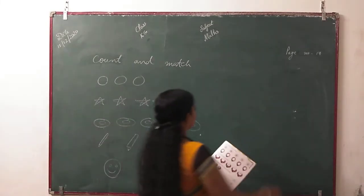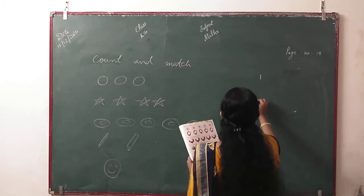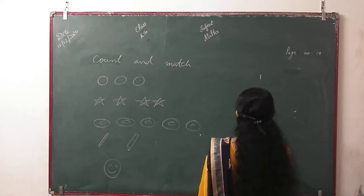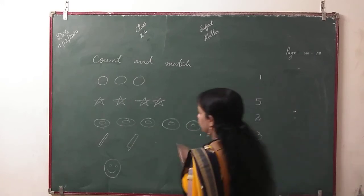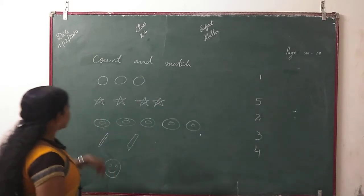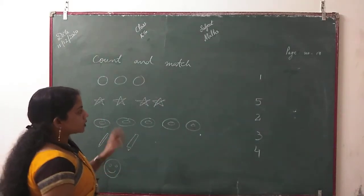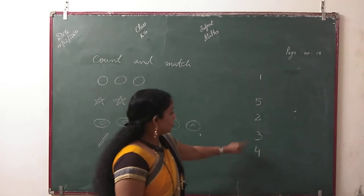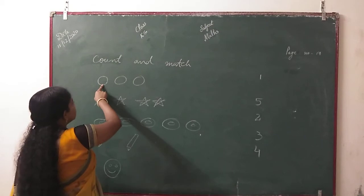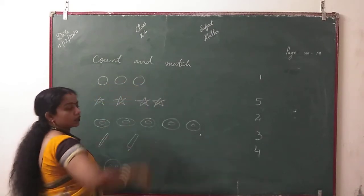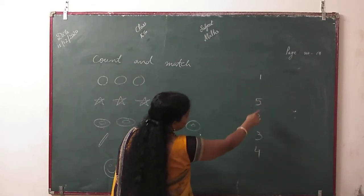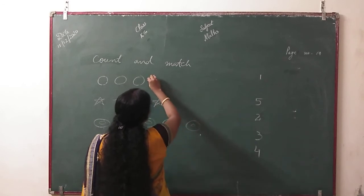This side of the number is 1, 5, 2, 3, and 4. I have made objects. So, how many objects do you have to count? After that, you will see where the number is. You will match that number with objects. 1, 2, 3. How many objects? 3. We will match this number.